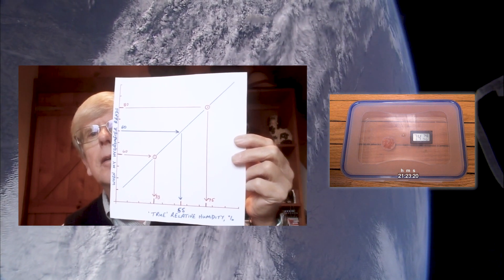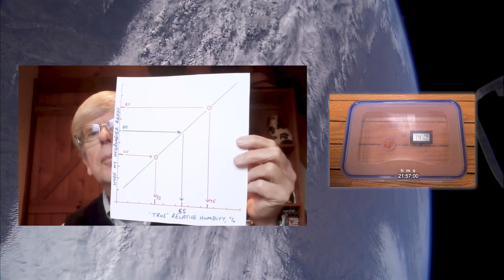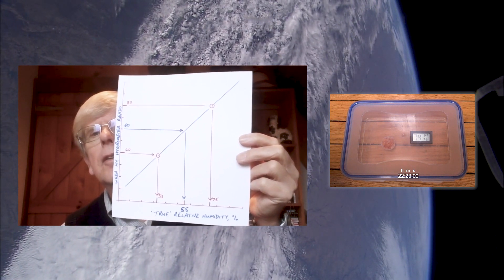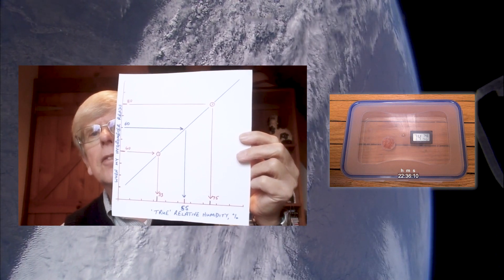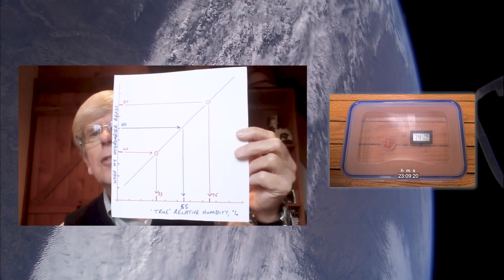Pack it up in some foil or whatever you do to keep it equilibrium at that humidity, and send it off and you can be assured then that your customer will find that it's arrived with a relative humidity around it of 55%. So that's why we do bracketed calibrations.